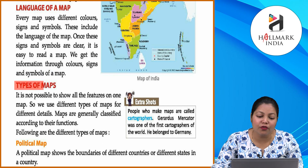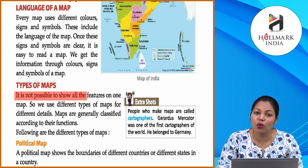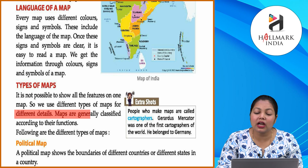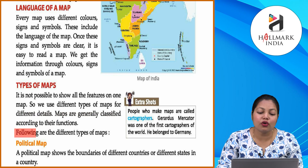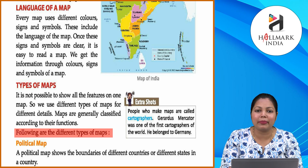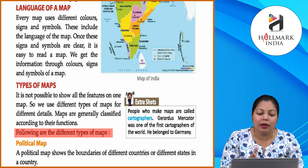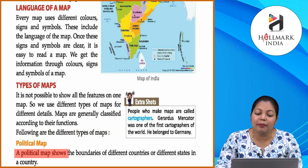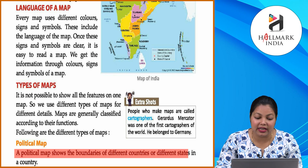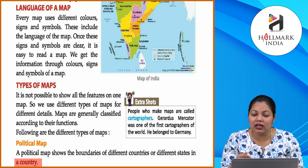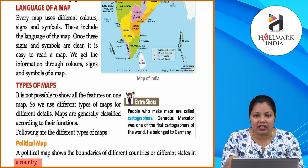Now, types of map. It is not possible to show all the features on one map, so we use different types of maps for different details. Maps are generally classified according to their functions. First is the political map. A political map shows the boundaries of different countries or different states in a country. Political map kya dikhata hai? Boundaries dikhata hai alag-alag countries ki, states ki.